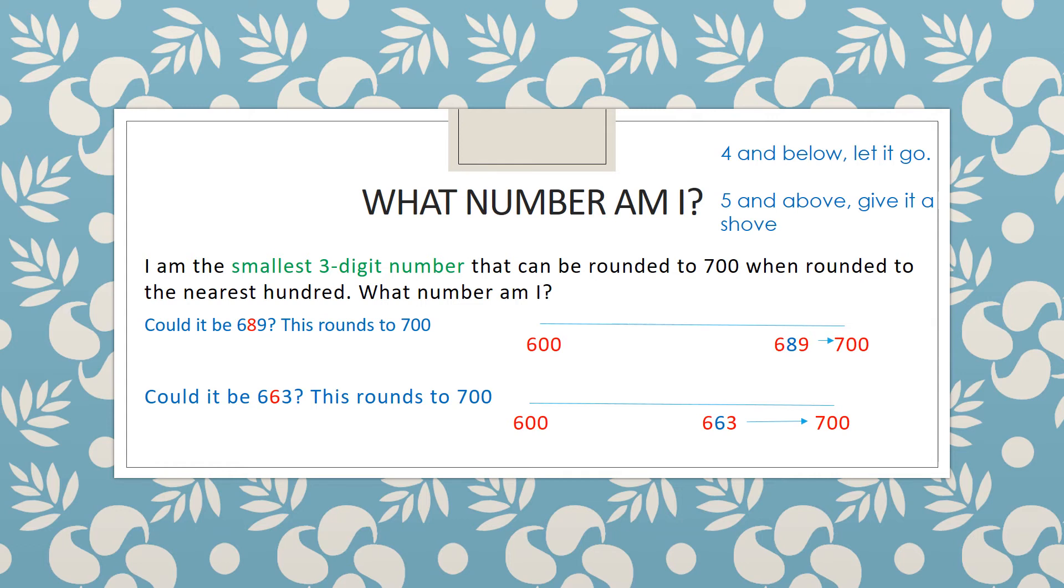So 689. This rounds to 700 because it has eight tens. Eight tens is above five tens and five and above you give it a shove so it rounds up to 700.